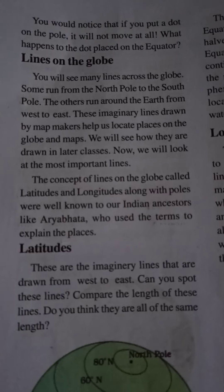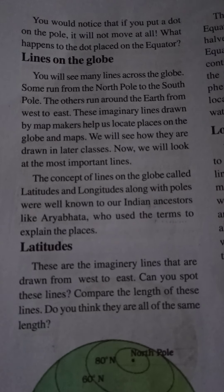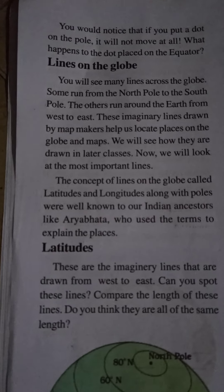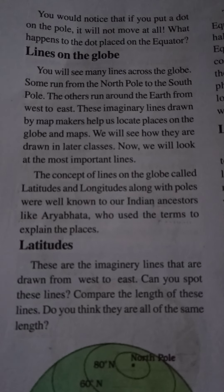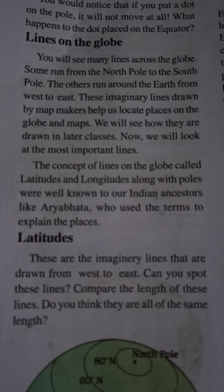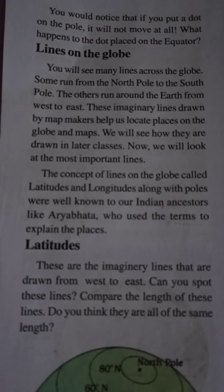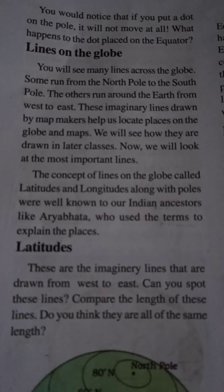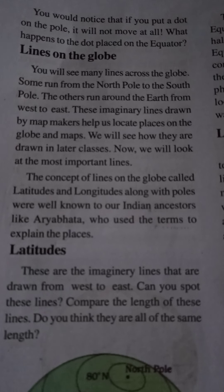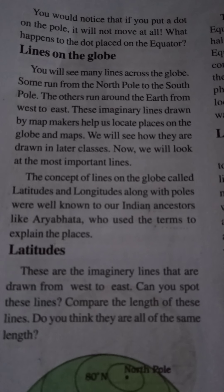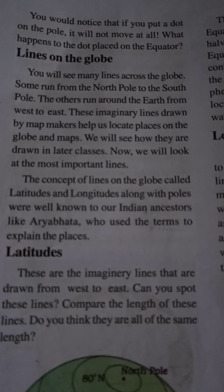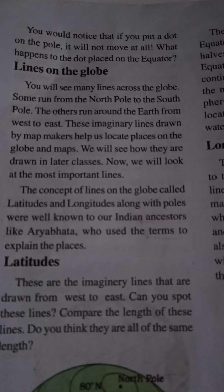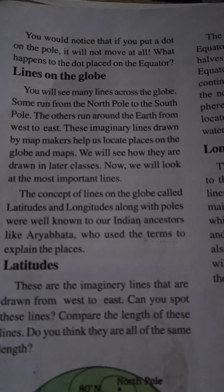Our next topic is lines on the globe. You may see many lines drawn across the globe. Some run from the North Pole to South Pole. The others run around the Earth from West to East. These imaginary lines drawn by map makers help us to locate places on the globe and maps. We will see how the lines are drawn in the later classes.